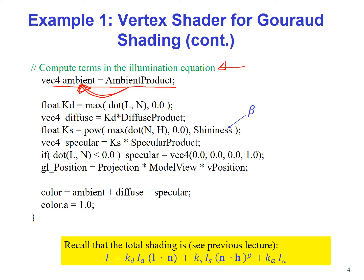Next, we calculate the diffuse component of the material properties by taking the max of L dot N with zero, so it cannot be less than zero. We cannot have negative reflection. Then we calculate the diffuse component by multiplying this Kd with the diffuse product.